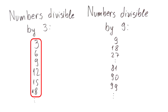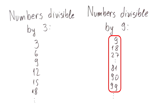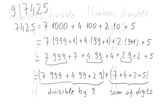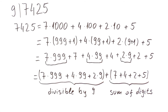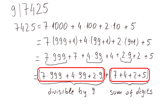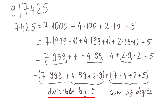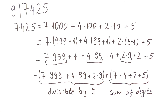We started by listing some numbers that are divisible by 3 and some that are divisible by 9. We then noticed that the same is true for the sum of their digits. We then represented the number 7425 as the sum of two parts, where the first part is divisible by 9 and the second part is the sum of its digits.